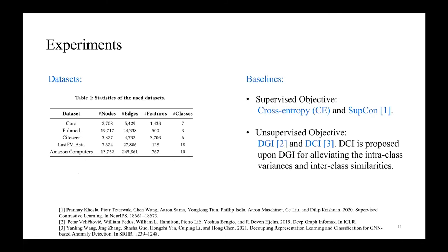We conduct experiments on five widely used benchmark datasets for node classification and compare with supervised objectives to evaluate how ClusterSCL performs for supervised learning of the graph encoder. And we also compare with the unsupervised objectives of DGI and DCI. DGI and DCI also work under the two-stage training scheme, and DCI is proposed upon DGI to alleviate the problem, which is very similar to the intra-class variances and inter-class similarities discussed in this paper.